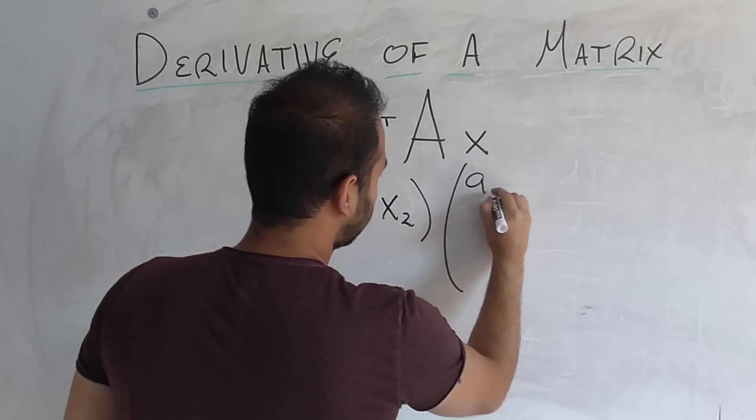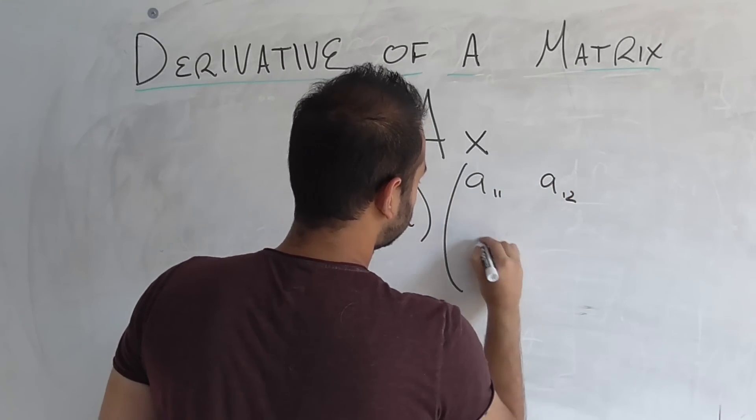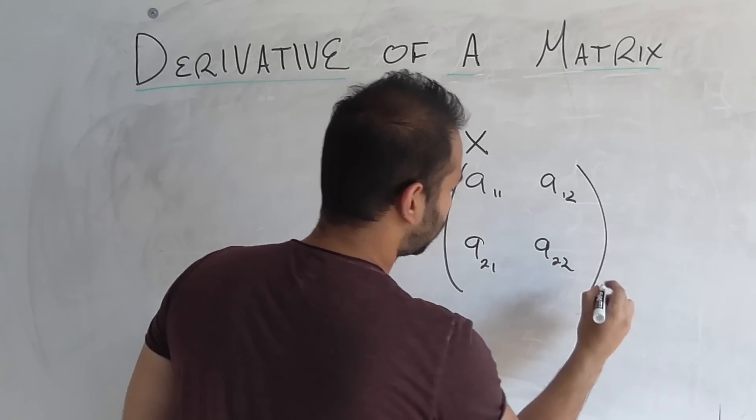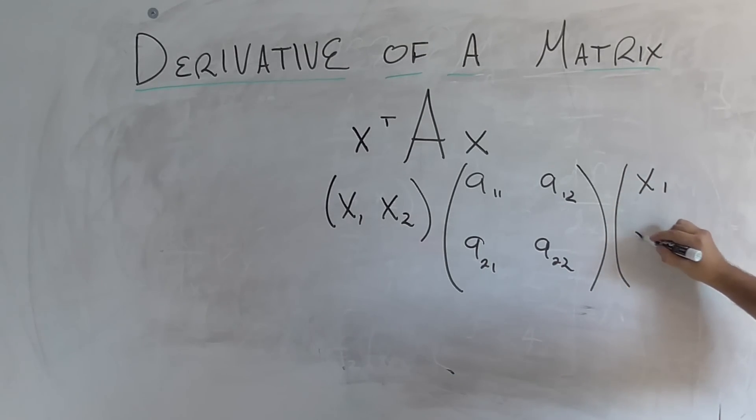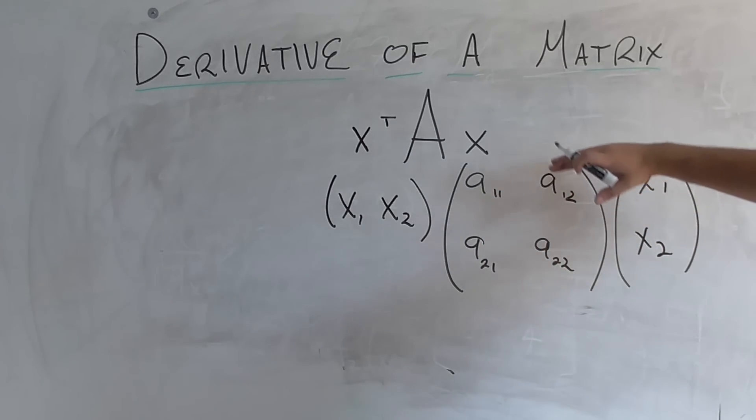A will be a11, a12, a21, a22. That's the four elements of A. And of course, the x is going to be x1 and x2. So I took that transformation and I wrote it out in its long format. Now let's work it out here.